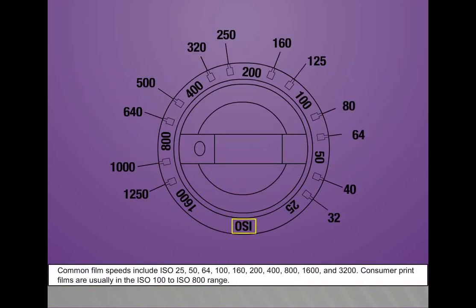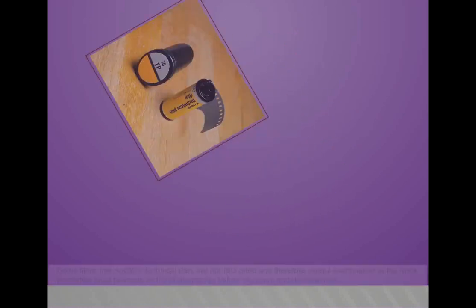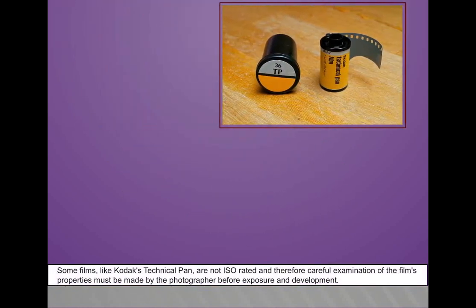Common film speeds include ISO 25, 50, 64, 100, 160, 200, 400, 800, 1600. Consumer print films are usually in the ISO 100 to ISO 800 range.